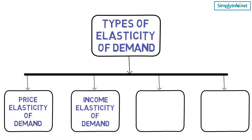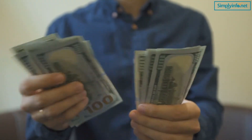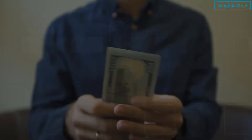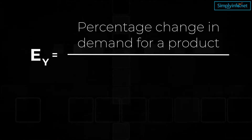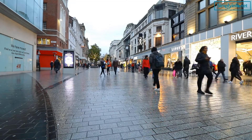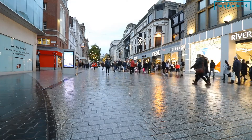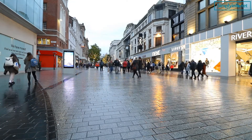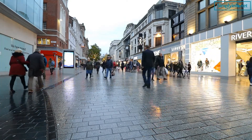Number 2: Income elasticity of demand. Income is another factor which influences the demand for a product. The degree of responsiveness of a change in demand due to a change in income is known as income elasticity of demand. The formula is: EY = percentage change in demand for a product divided by percentage change in income. For most goods, income elasticity of demand is more than 1, indicating that with a change in income, demand also changes in the same direction — more income means more demand, and less income means less demand.